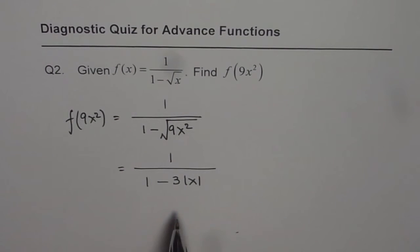So I hope you understand and appreciate why I have written the answer as 1 over 1 minus 3 absolute x. That is the answer for this question.